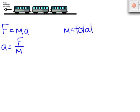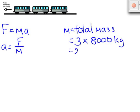Now the value of m that we have to use is the total mass of the three carriages. We're told that each carriage has a mass of 8,000 kilograms, and so the total mass of the train is going to be 24,000 kilograms.